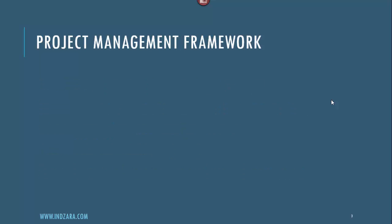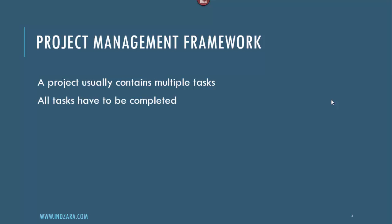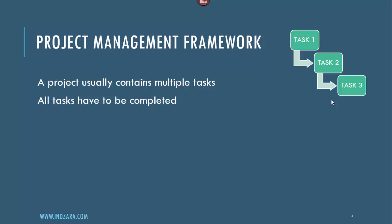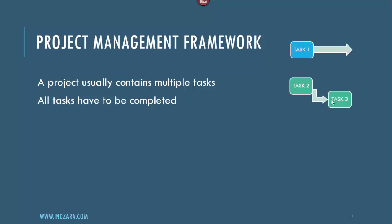Before we get into the specifics of the template, I want to spend a few minutes on the project management framework used here. A project usually contains multiple tasks, and all tasks have to be completed for the project to be completed. Tasks can be parallel — for example, tasks 1, 2, and 3 can be done in parallel — or tasks can be dependent on each other. For example, task 2 can begin only when task 1 is completed. You could also have a hybrid scenario where some tasks happen in parallel and some are dependent on others, which is the most common scenario. This template can handle all these possible scenarios.